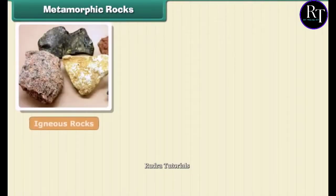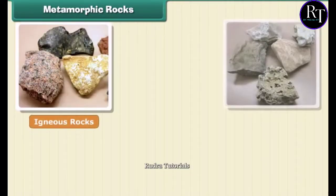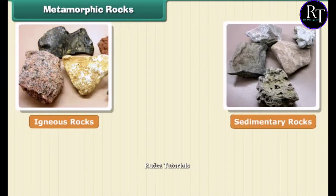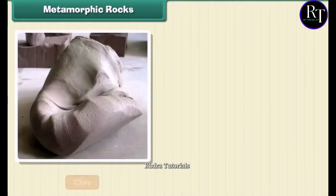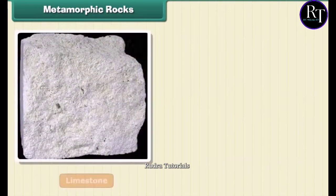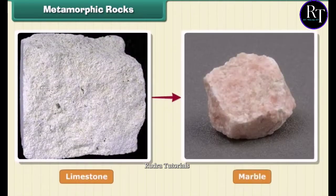The third type of rock is made out of the first two types. These are metamorphic, or changed, rocks. Igneous and sedimentary rocks can change into metamorphic rocks under great heat and pressure. For example, clay changes into slate and limestone into marble.